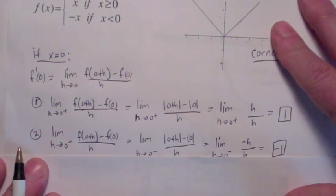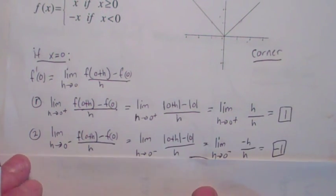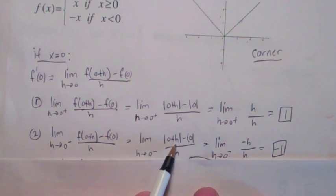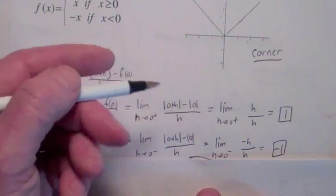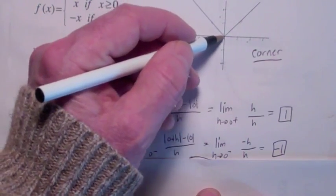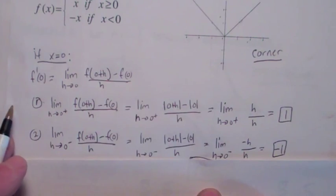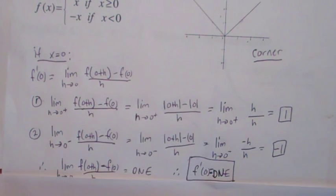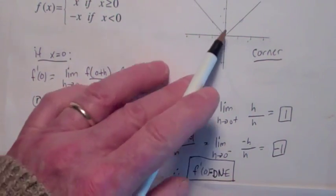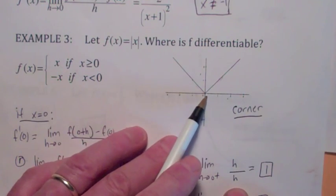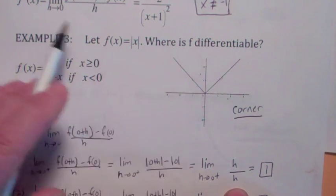But if you approach 0 from the other side, if h is a negative number, then the absolute value of a negative number equals the opposite of it. So the absolute value of h, if h is less than 0, becomes negative h. If this is 0 and h is a negative number, the slope of the secant line is negative 1. So when you take the limit as h goes to 0, you get negative 1. Since the right and left limits don't agree, the function is not differentiable — f'(0) does not exist. That's true whenever you have a corner.